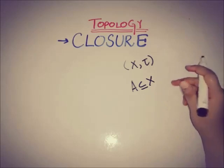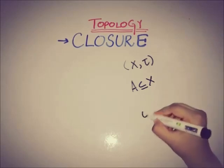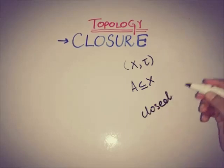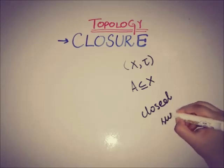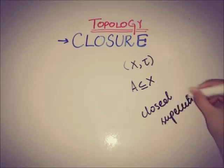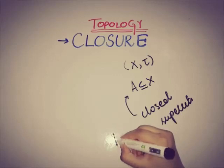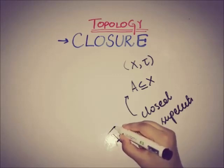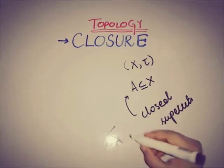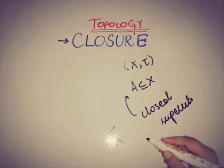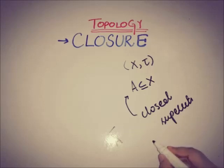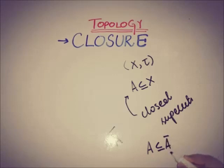...the intersection of all of the closed supersets of A is known as the closure. It is the smallest closed set, and it is denoted by  Â or Ā.